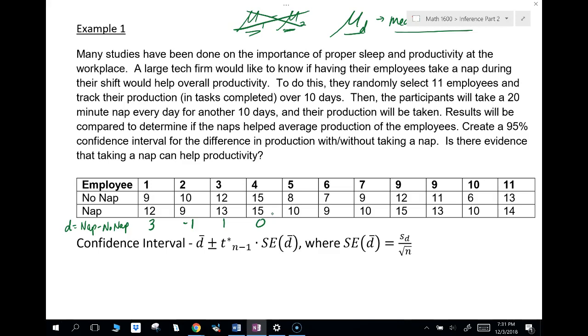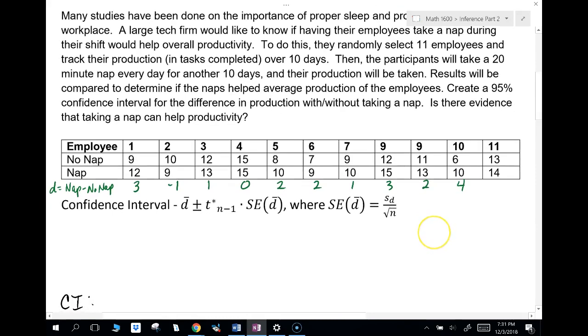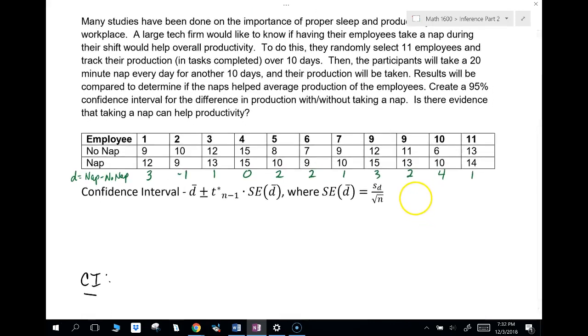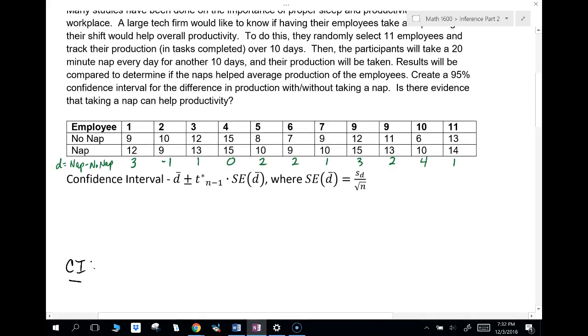So what I want you to do right now is subtract all of those. You're going to go nap minus no nap. 12 minus 9 is 3. 9 minus 10 is negative 1. Before I go on, let me quickly talk about what these numbers represent. This 3 represents that employee 1 completed 3 more tasks with the nap than without the nap. Employee 2, the nap actually made his or her productivity worse. They had one less task completed with the nap than without.